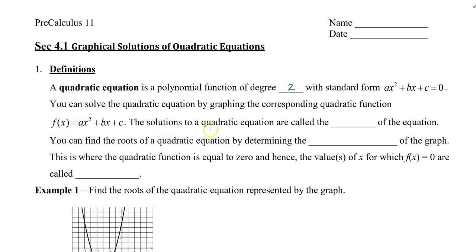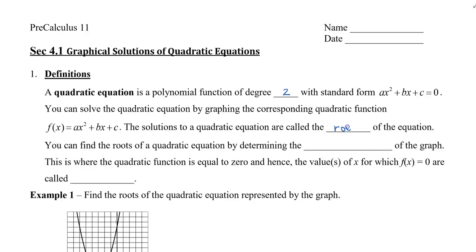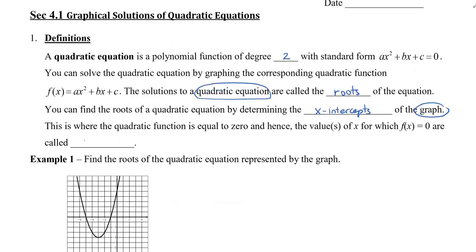The solutions to a quadratic equation are called the roots. So that's a special name for the solution of a quadratic equation. Now you can find the roots of a quadratic equation by graphing. So when you graph it, you are looking for the x-intercepts of the graph. This is where the quadratic function is equal to 0, and hence the values of x for which f of x are equal to 0. So since we're talking about 0, another name is also called zeros, which is another name for the solution.